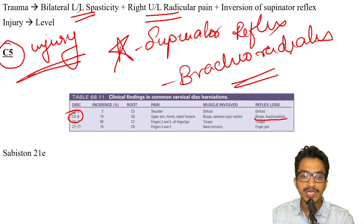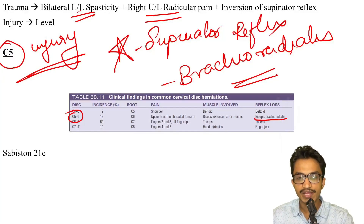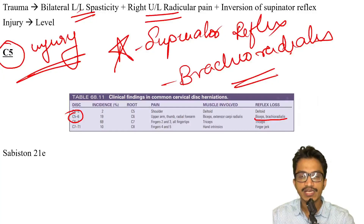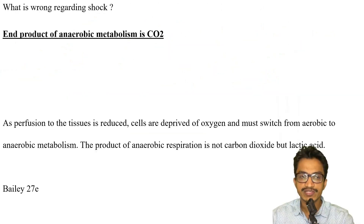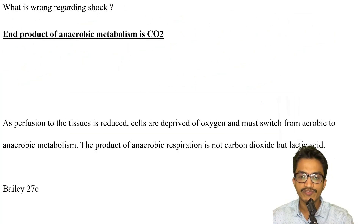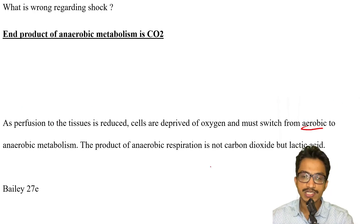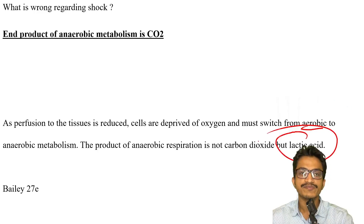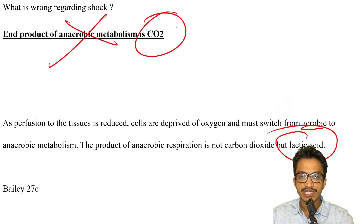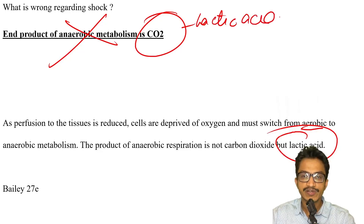If the root level is asked it would be C6, but if the level is asked it is usually C5. There is no direct reference I could find for this particular clinical scenario, but the best answer would be C5. Regarding what is wrong about shock: there is a shift from aerobic to anaerobic metabolism and the end product is not CO2 but lactic acid, leading to metabolic acidosis.